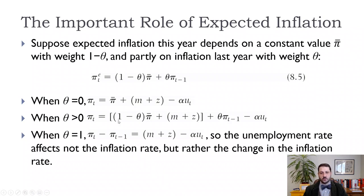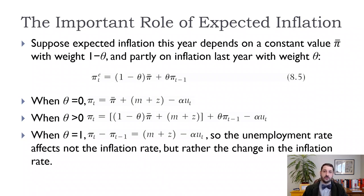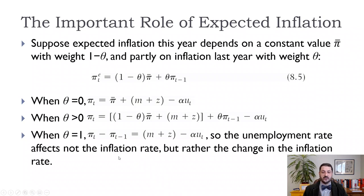The simplest and most useful case is when θ equals one — purely adaptive expectations — where we expect this year's inflation to be the same as last year's. This is simple and we can look for it in the data. If we move expected inflation (now equal to π_{t−1}) to the left-hand side of our equation, we get π_t minus π_{t−1} — the change in inflation — equals m plus z minus α times u_t. So instead of the level of inflation, we have the change in inflation on the left-hand side.